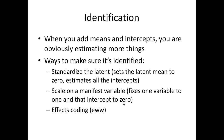Coming back to identification: when I add in estimating means and intercepts, you're obviously going to be estimating more for each variable. Each square now has a path coefficient, an error term, and an intercept. The latent variables have variances and means. So we're adding to the number of things we're estimating.